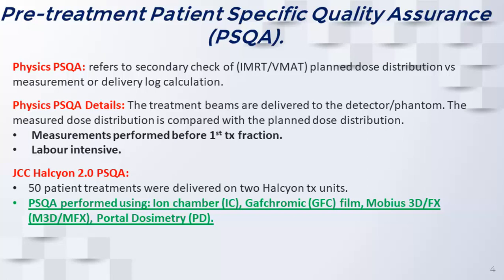From a physics perspective, patient-specific QA refers to a secondary check of the actual clinical treatment plan dose distribution using either a measurement device or some sort of delivery log method. We're actually taking that clinical plan, running it on the clinical treatment unit, and measuring it. A PSQA measurement is typically performed before the first treatment fraction and can be very labor-intensive depending on the measurement method used. For this study, we looked at 50 patient treatments split approximately evenly between the two Halcyon units, using ion chamber, Gafchromic film, Mobius 3D, Mobius FX, and portal dosimetry.